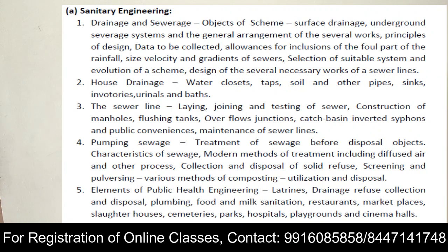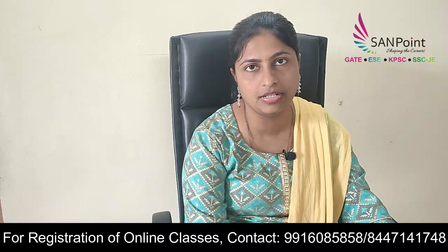Environmental engineering covers how to collect waste, different types of house drainage systems, sewer lines, how to lay and construct them, pumping of sewage — why it is needed, where it is needed, and how waste is disposed. Then comes public health engineering — refuse waste, milk sanitation, medical waste — which is more theory-based. So it is completely environmental engineering.